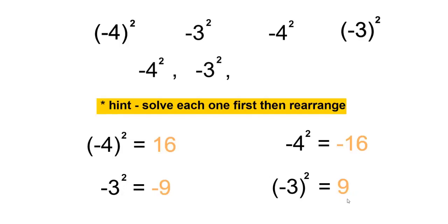Then we have positive 9, which is in brackets, negative 3 to the power of 2. And the largest value is 16, which is in brackets, negative 4 to the power of 2.